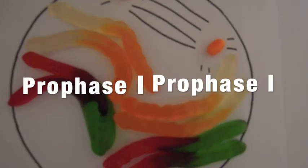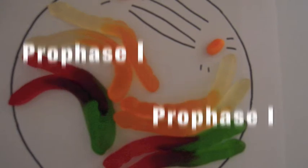Meiosis I, prophase I is the first phase just as it was in mitosis. During prophase I, replicated homologous chromosomes pair and exchange segments. Unlike mitosis, synapsis of homologous chromosomes occurs in prophase I of meiosis.